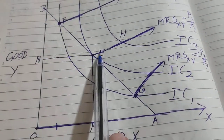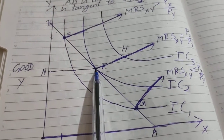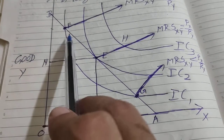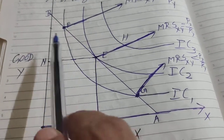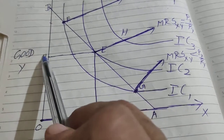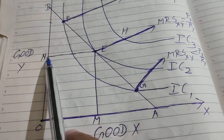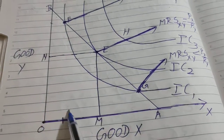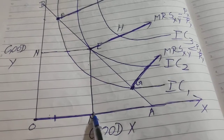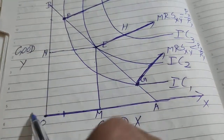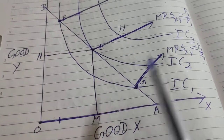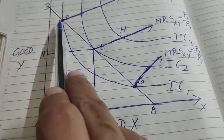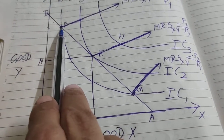Agar usne F se E tak equilibrium wale point pe aana hai to consumer ko Y ko sacrifice karna padega — F se lekar E tak aane ke liye ushe N tak ki quantity Y ki chodni padegi. Consumer will reach this equilibrium point by sacrificing Y and increasing X consumption from this point up to M. That means consumer will buy ON quantity of Y and OM quantity of X. He will be in equilibrium when MRS_xy equals Px upon Py. Jab consumer Y ki quantity ko sacrifice karega to MRS will decline from F to E.